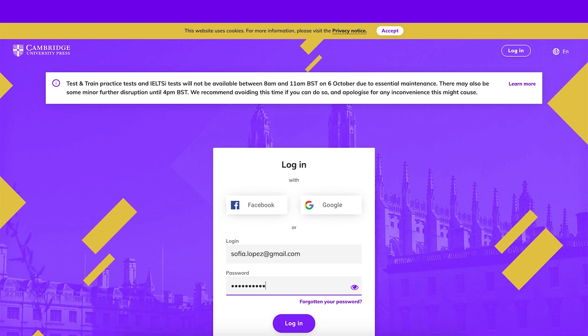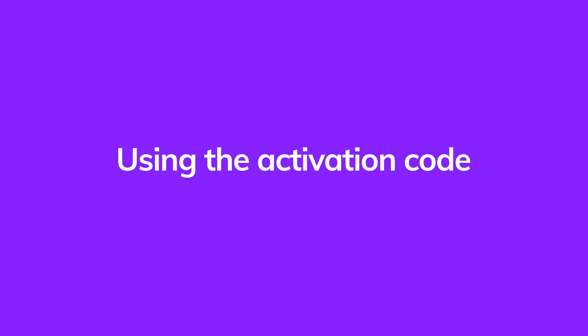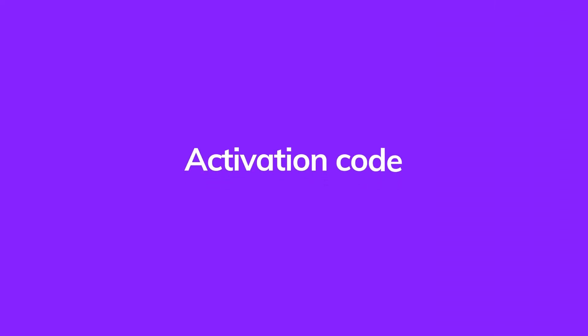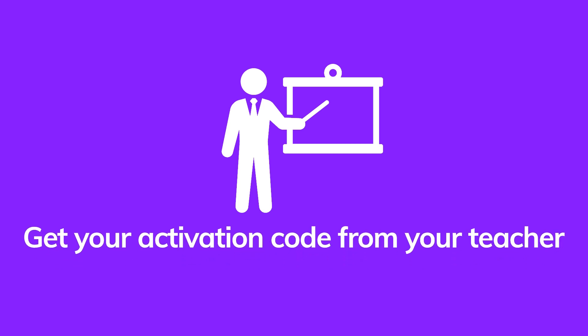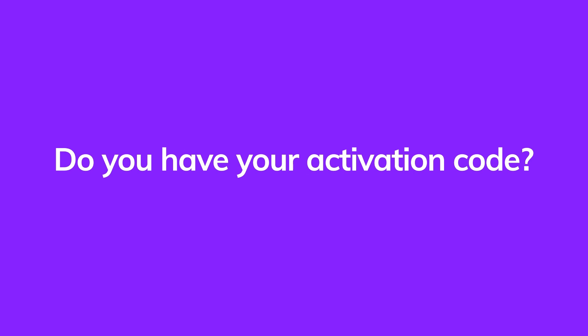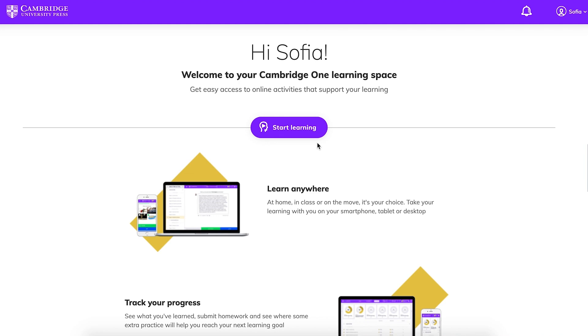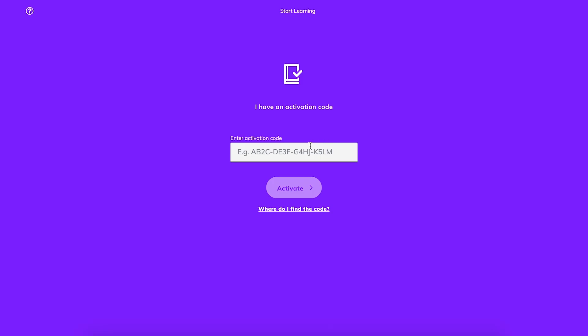Now let's use the activation code. Once you've logged in, you'll need an activation code to start using Study and Succeed. An activation code has 16 numbers and letters and looks like this. You can get your activation code from your teacher. Now you need to log in, choose Start Learning, then enter your activation code.